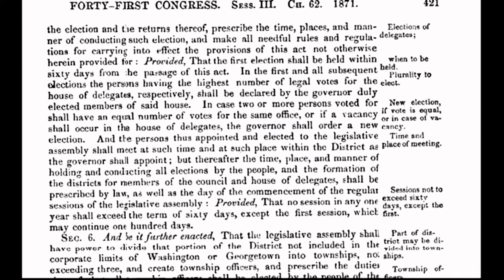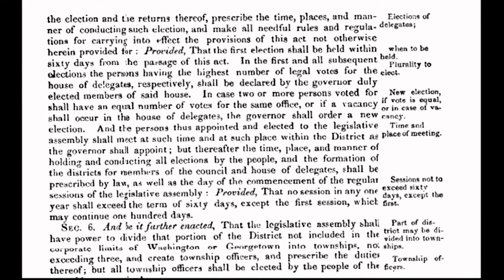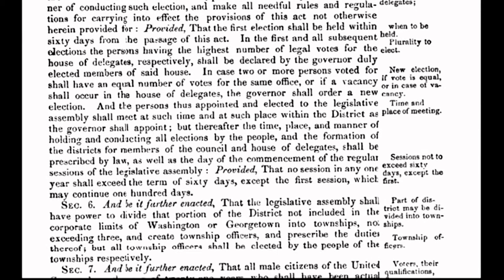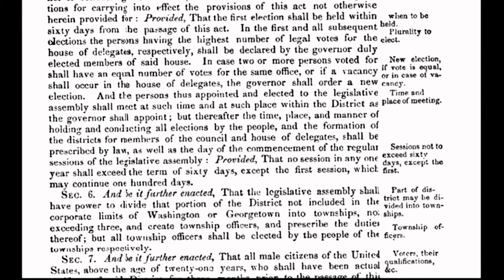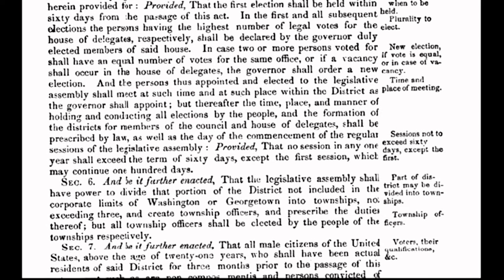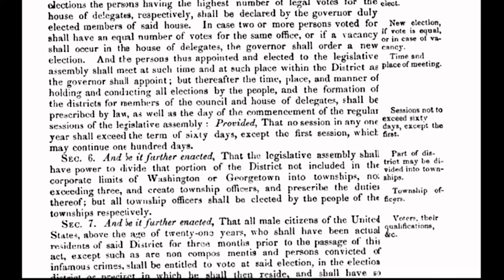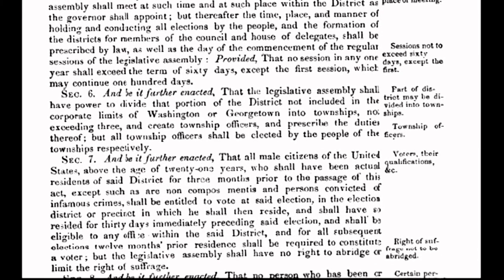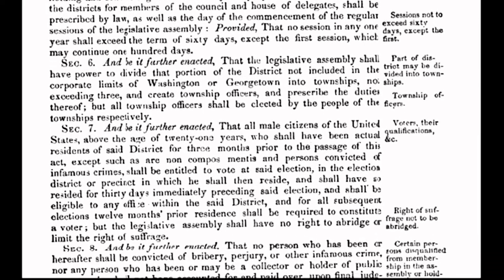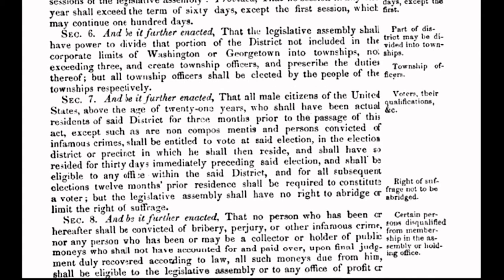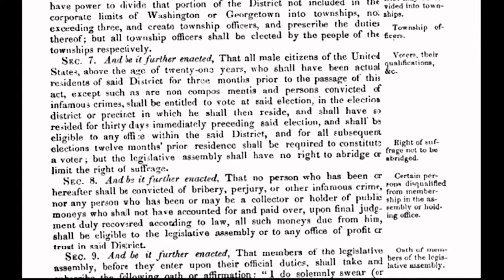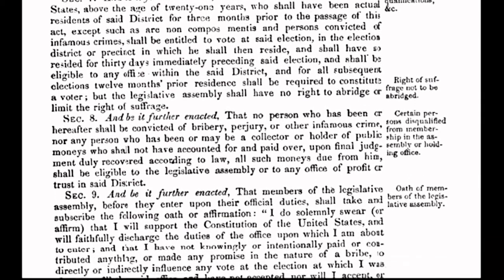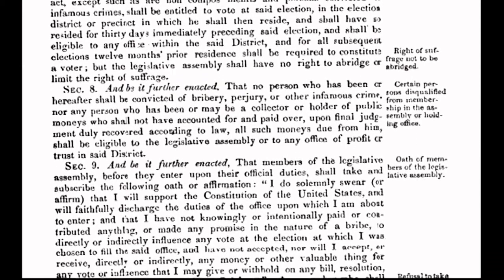Our corporate form of governance is based on Roman civil law and admiralty — or maritime — law, also known as the divine right of kings and the law of the seas; another fact of American history not taught in our schools. Roman civil law was fully established in the 13 colonies before our nation began, and then became managed by private international law. The government created for the District of Columbia via the Act of 1871 operates solely under private international law, not common law, which was the foundation of our constitutional republic.